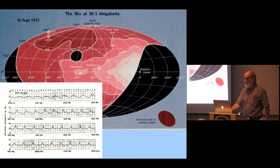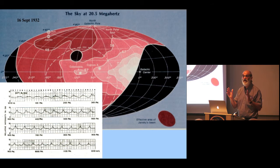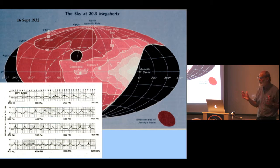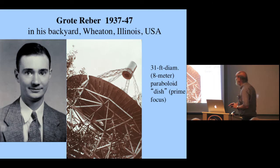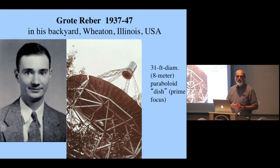Jansky published this in the Proceedings of the Institute of Radio Engineers. He had to spend four or five pages explaining what right ascension and declination were. Basically nothing happened with it throughout the 1930s, with one exception—Grote Reber, a very talented radio engineer often called a radio amateur, but much more than your average ham operator.